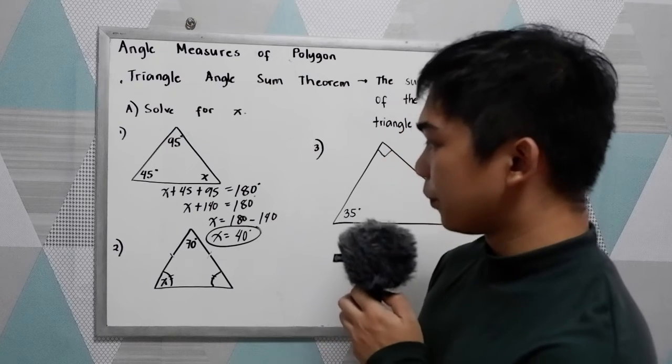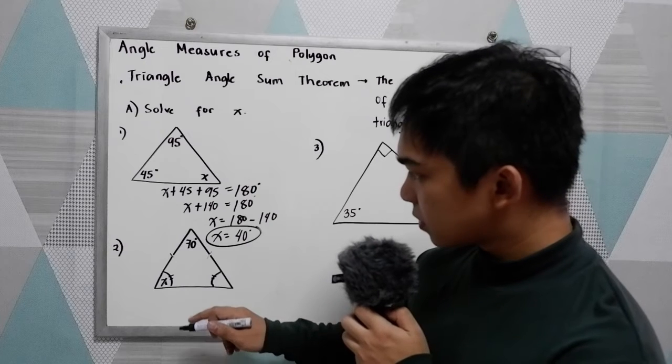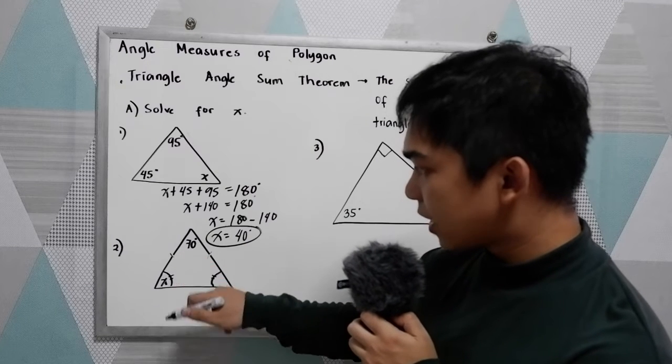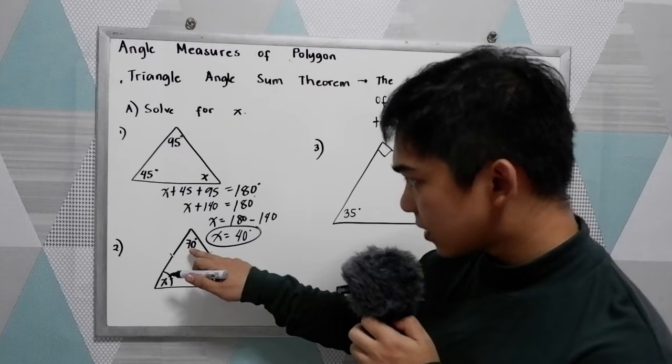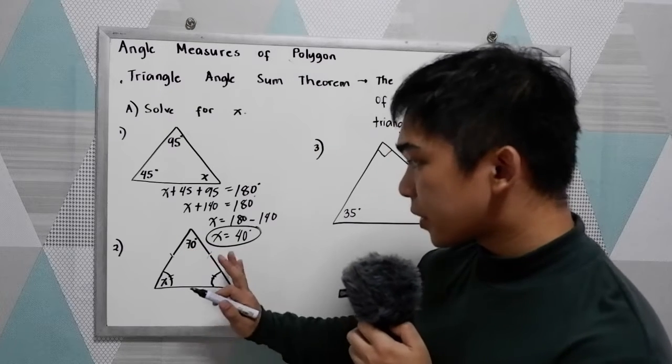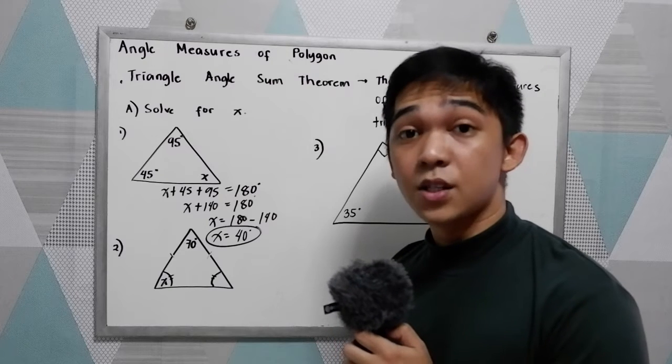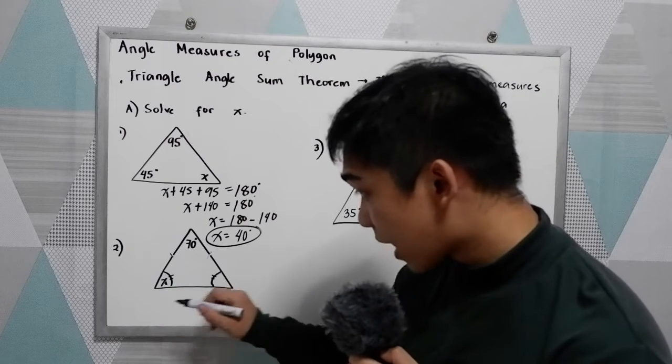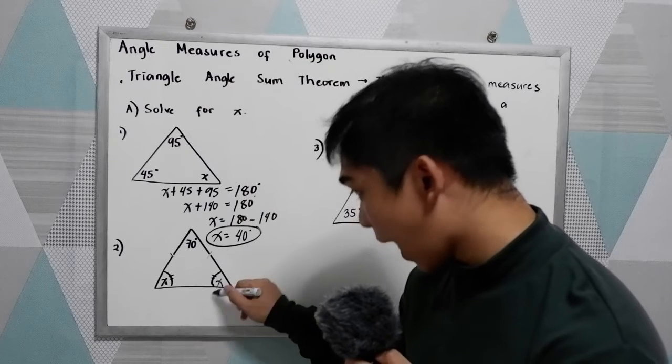Now number two. Solve for x. We have the given x, then 70, then unknown. Study our given. So this is an example of isosceles triangle. If this is x, this is also x.